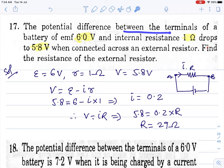Question seventeen. Potential difference between the terminals of the battery is 6V and internal resistance is 1 ohm. It drops to 5.8V when connected across external resistance. When it draws current, it drops and becomes terminal potential. Find the resistance of the external.